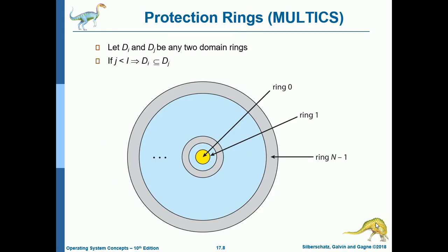There is an illustration of protection rings used by Multics. Let D_i and D_j be any two domain rings. If j < i, then D_i is a subset of D_j. The outer ring (ring N-1) is for users, and ring 0 (the innermost) gives full control of the system — it's like privilege escalation. If you know the administrator password, you will be in the innermost ring.